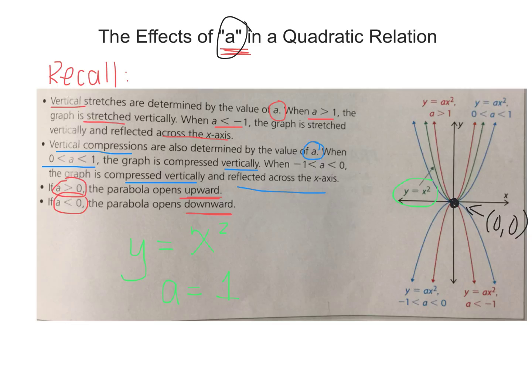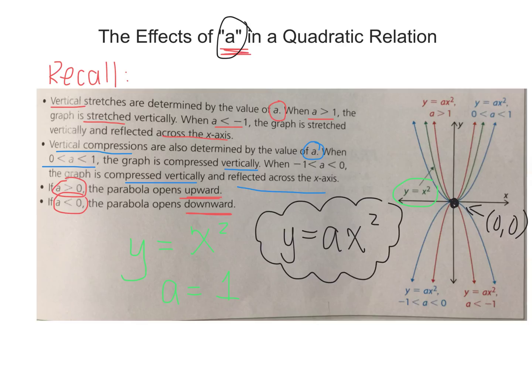Anything in the form y equals ax squared will always pass through the origin. Today we're going to be examining the effect of A in the equation y equals ax squared on the graph.